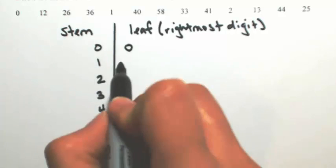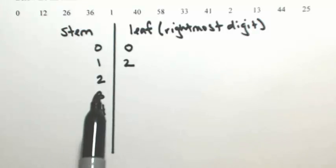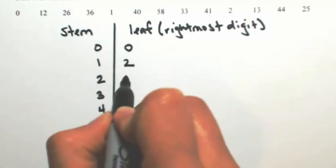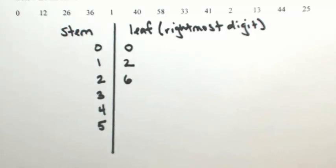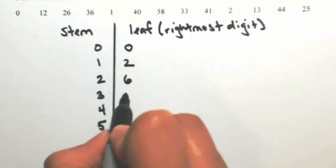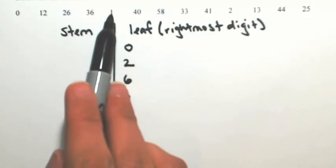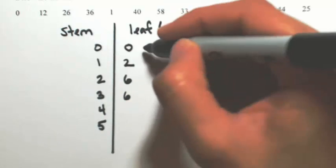For 12, I already have the 1, so I'll write a 2 - this represents 12. For 26, I write a 6. For 36, I write a 6. For 1, there's technically a 0 before it, so this is 0, 1. For 40, I write a 0.